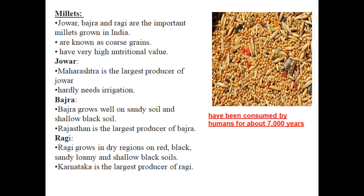Jowar is the food crop of Maharashtra and is also grown in north India. Maharashtra is the largest producer of jowar. Bajra — Rajasthan is the leading producer. Ragi — Karnataka is the leading producer. These coarse grain millets help prevent many diseases including cancer, diabetes, and gluten intolerance.